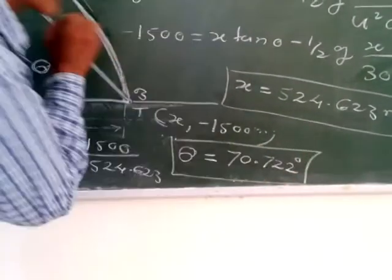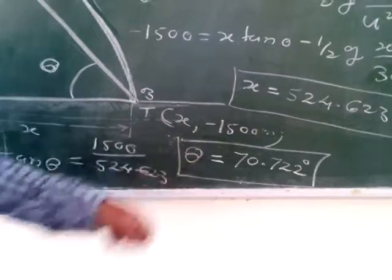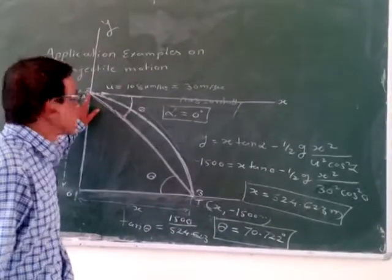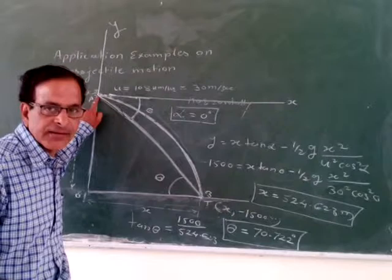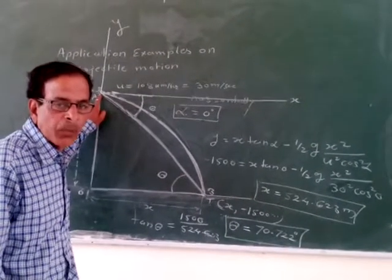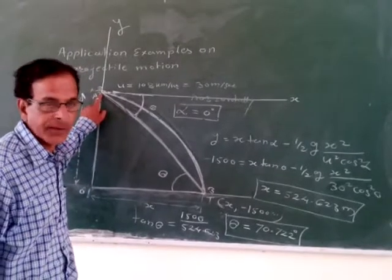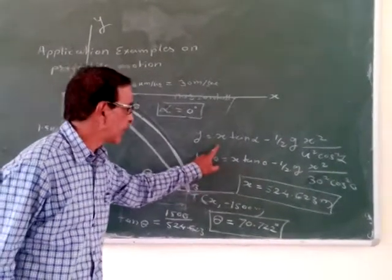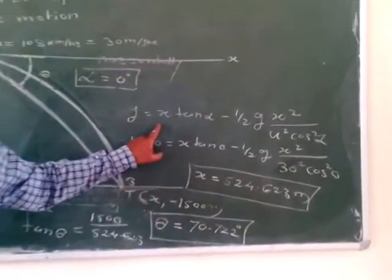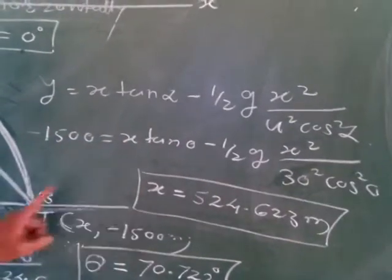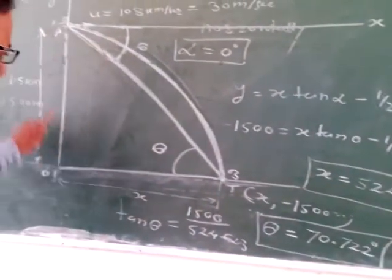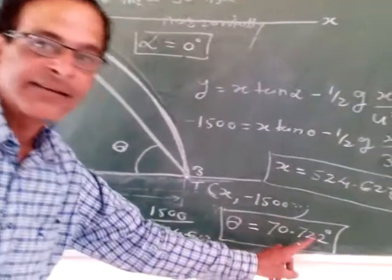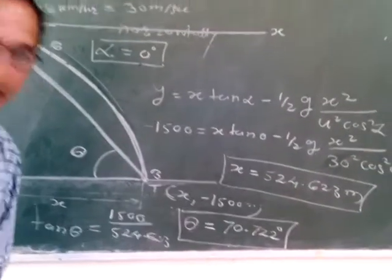So 70.72 degrees is our answer. We have seen how to apply the trajectory equation. What we must remember: draw the reference axes from the point where projection starts, note the coordinates of the striking point, apply the trajectory equation to get the value of x, then use simple trigonometry — tan(θ) = opposite/adjacent — to find the angle θ. Thank you very much.